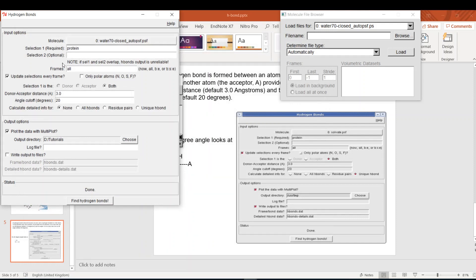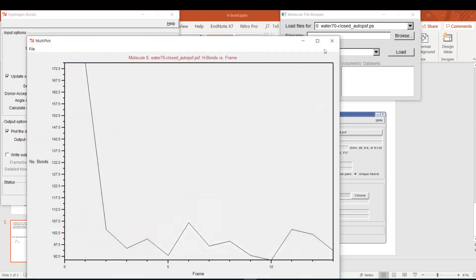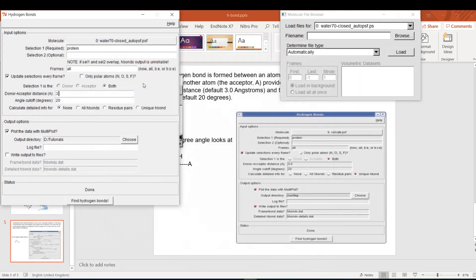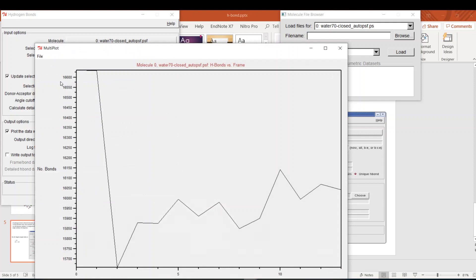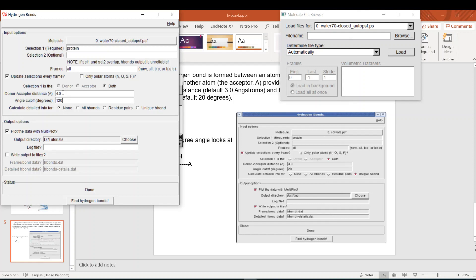Let's check if I increase the cutoff distance to 4 and increase the angle to 120 degrees. What I'm expecting is it will increase the number of hydrogen bonds. You see 16,600 - this is too much. But this is very weak. I mean you are letting everyone pass from your threshold.